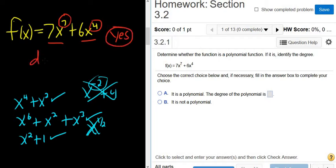And to find the degree, we just pick the biggest exponent. So in this case, the biggest exponent is 7. So the answer is degree 7, and it is a polynomial.